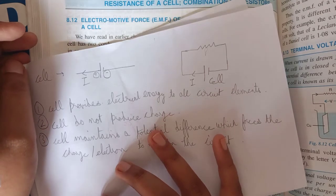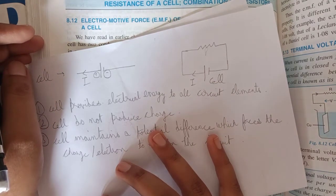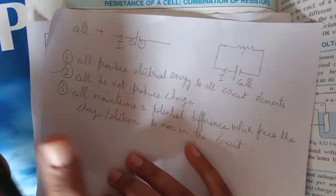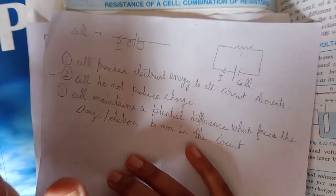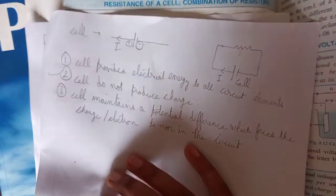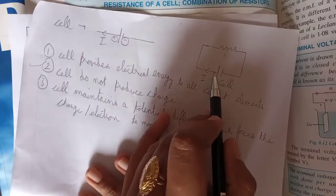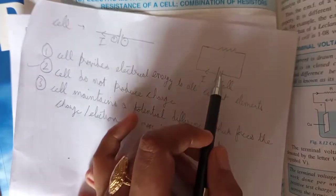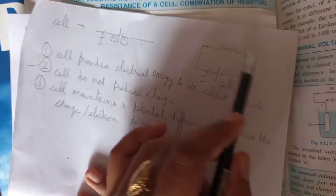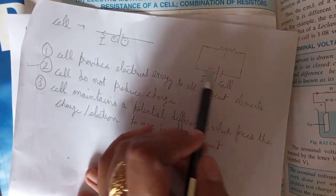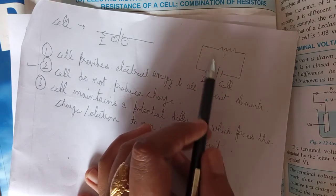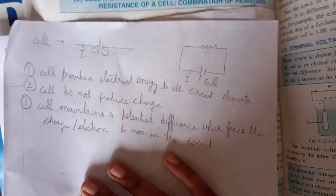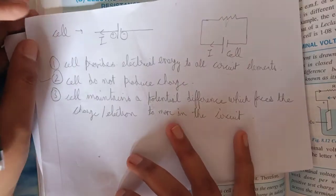Cells do not produce charge. Cells provide energy to the charges, but charge itself is not produced. The electrons go from the cell, give energy to circuit elements such as resistance, and come back. So the cell provides electrical energy to all the circuit elements but does not create new charge.